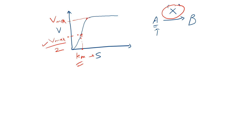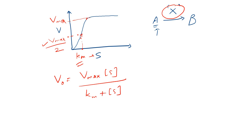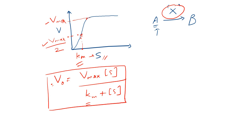In the Michaelis-Menten equation — v0 = Vmax·S / (Km + S) — Vmax is the maximum speed of the reaction, S is the substrate concentration, v0 is the initial velocity as the enzyme begins converting substrate to product, and Km is the substrate concentration at which the speed of the reaction is half of its maximum value. I hope you have now understood this equation.